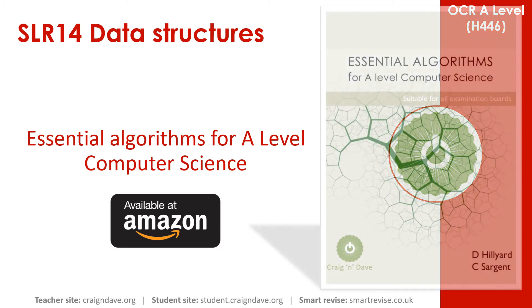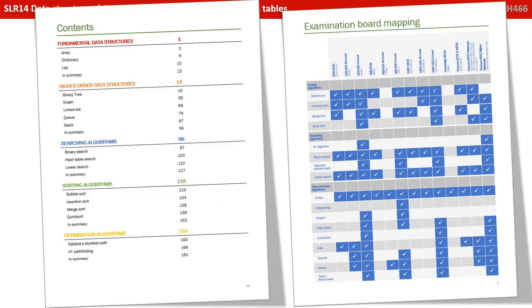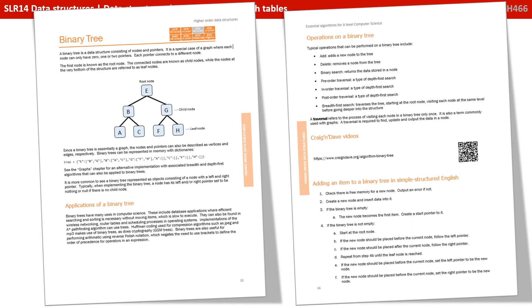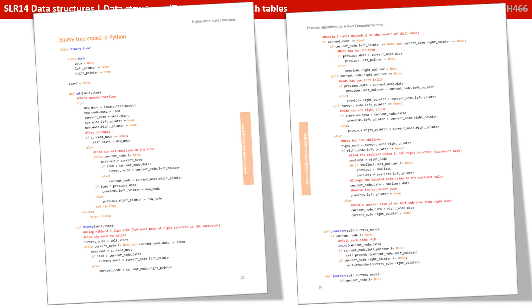We know that getting to grips with data structures and all the algorithms associated with them is a very tricky area of the course. So we've produced a book called Essential Algorithms for A Level Computer Science, available on Amazon. It covers all the data structures you need to know about along with the algorithms you need to perform on them, and it covers all the exam boards. We overview each data structure discussing its typical applications and operations, provide a QR code linking to additional resources, and present each algorithm first in simple structured English, then in a diagrammatic format, then in pseudocode, and finally as fully coded algorithms in both Python and VB, so you can code them up and practice yourselves.